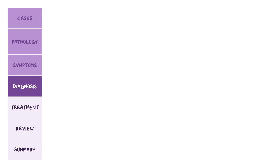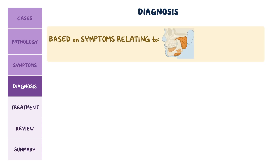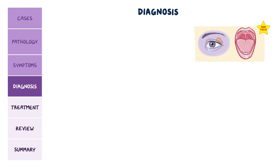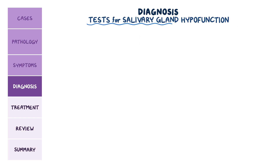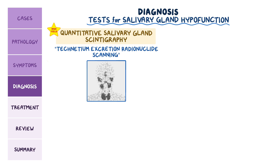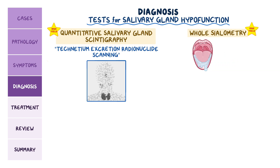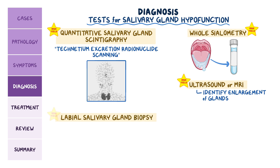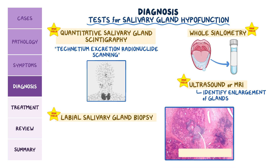Since virtually any organ or gland can be affected, diagnosis is based on symptoms relating to salivary gland, mouth, and eye involvement. These symptoms must persist for more than three months and must occur daily. Tests that identify salivary gland hypofunction should be done, including quantitative salivary gland scintigraphy, also called technetium excretion radionuclide scanning, which shows how the major salivary glands are functioning based on their uptake of a radionuclide. There's also whole sialometry, which measures the rate of saliva production over a time frame. Imaging like ultrasound or MRI can identify enlargement of the salivary glands. Finally, labial salivary gland biopsy can be done as a confirmatory test, and it typically shows focal lymphocytic sialadenitis.